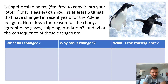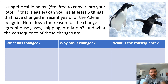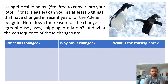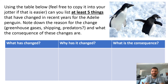Then note down the reason for why it's changed — was it shipping, was it predators, was it greenhouse gases, was it human activity? And finally, what the consequence was — what has happened to the penguins as a result? For example: what has changed — there's a lack of food; why has it changed — could be fishing; and what is the consequence — does that mean they're malnourished, does that mean they can't have as many offspring?